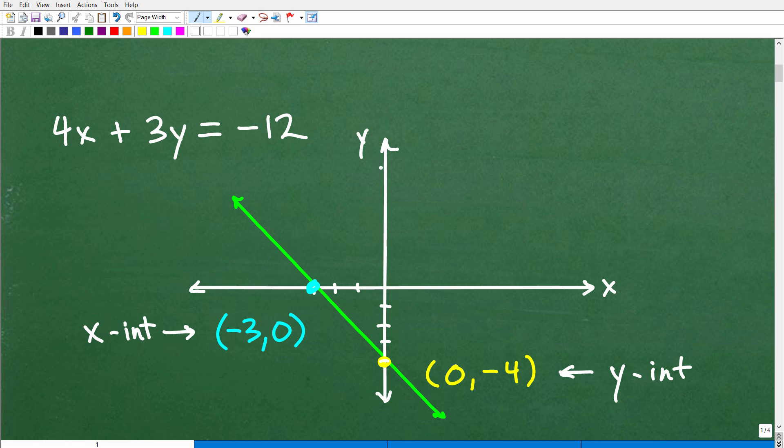Here is a nice little xy plane. By the way, we're just looking for a sketch. It doesn't have to be a perfect graph. Here are the intercepts. Our y-intercept, this is the y-axis right here, is located at 0, negative 4. And our x-intercept right here is located at negative 3, 0.